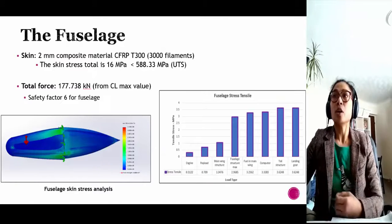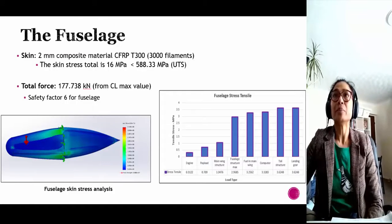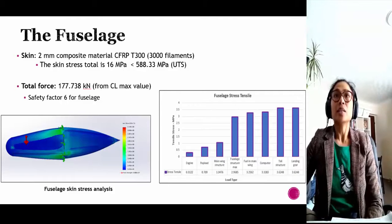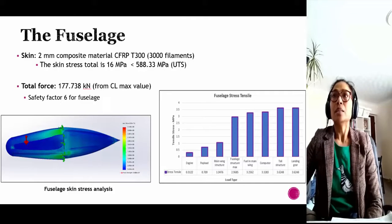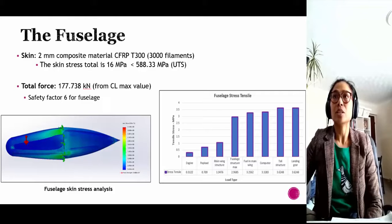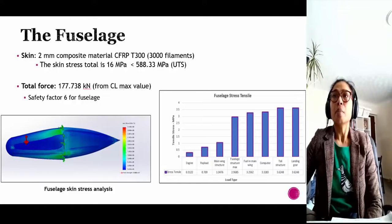The skin is made of composite material with 2 millimeter thickness. The graph on the right shows the stress skin based on load distribution calculation. The stress due to the fuselage structure itself is 2.9 megapascals.